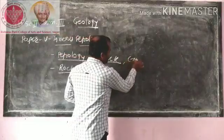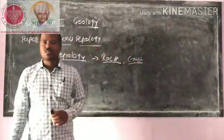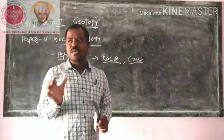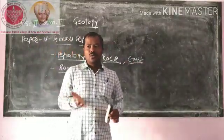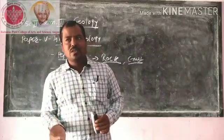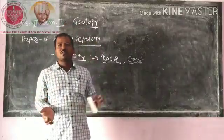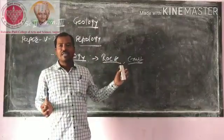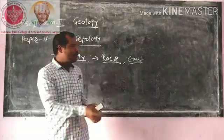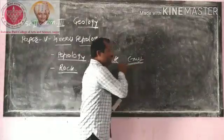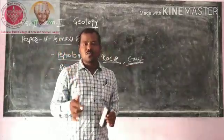Here one word is 'crust.' What is crust? Crust is the uppermost layer of the earth. Last year we studied the internal structure of the earth, in which we studied the earth crust. The earth crust has a thickness of 5 to 75 km. The earth crust is completely solid and consists of rock.